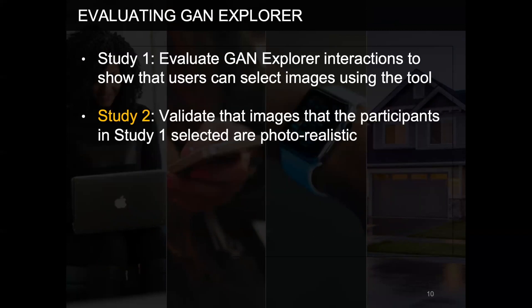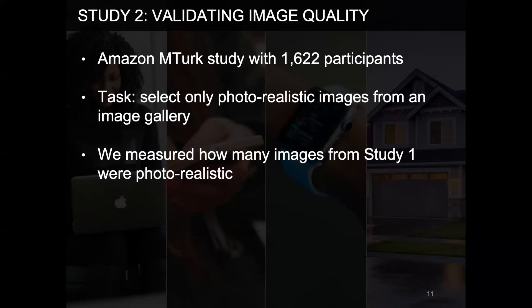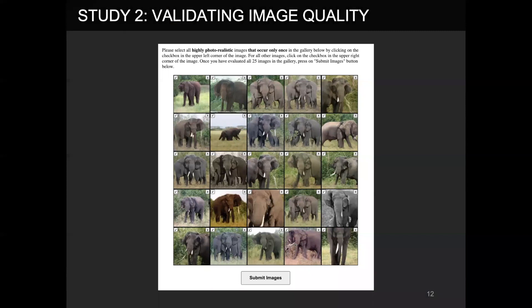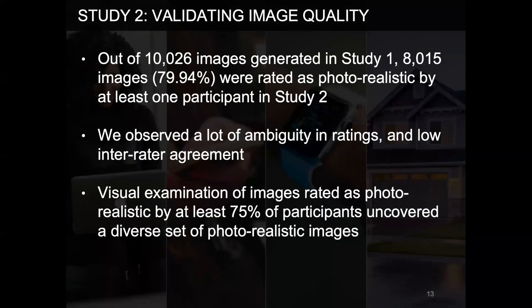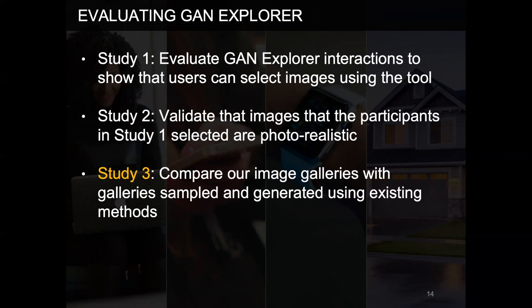In study 2, we validated that images participants selected in study 1 were actually photorealistic. We conducted another Amazon Mechanical Turk study with 1,622 participants and asked them to select only photorealistic images from an image gallery consisting of randomly sampled images from study 1. Participants used a custom labeling tool we developed for the study. Our results suggest that our interface could support exploration and selection of photorealistic images from GANs. However, we also noted that participants often disagreed on what makes a GAN-generated image photorealistic.